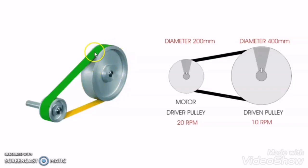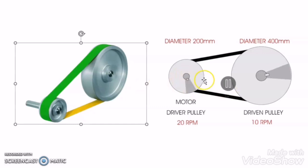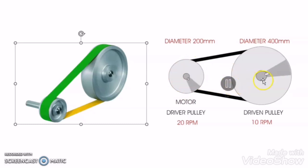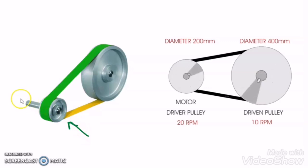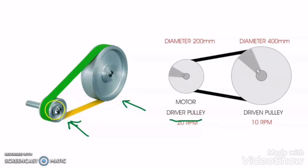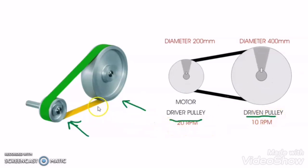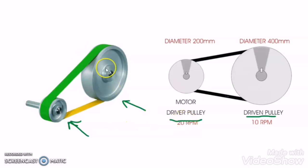Pulleys are nothing but a simple ring or a simple wheel which have a groove to carry the driving belt. Here in this example, you can see that there are pulleys and due to the help of one pulley the other pulley is driven. The pulley connected with the motor shaft is called the driver pulley, and the pulley driven by the driver pulley with the help of a belt is called the driven pulley. The pulley connected with the load is called the driven pulley.